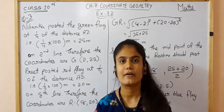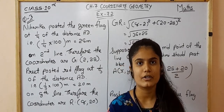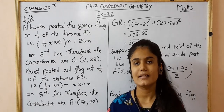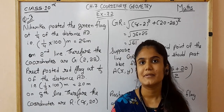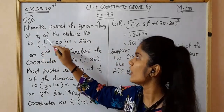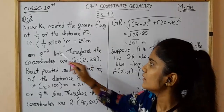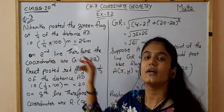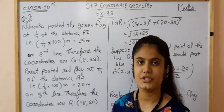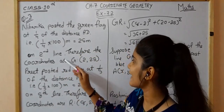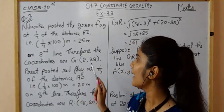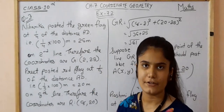It is given that 100 flower pots are placed at 1 meter distance, so the ground is 100 meters long. Niharika posts the green flag at 1/4 of distance AD, which is 1/4 into 100 = 25 meters. She runs 25 meters on the second line. Therefore, the coordinates for the green flag are (2, 25).